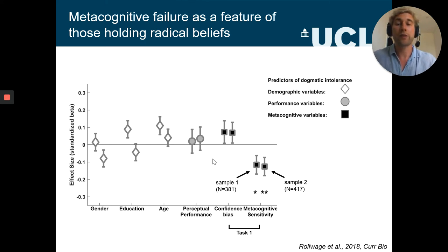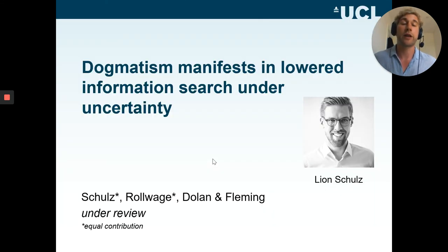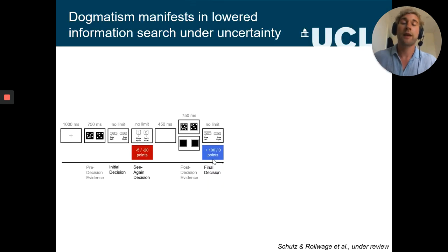Then we went on and tried to extend these findings in a study that I did in collaboration with Leon Schulz, where we asked, is it maybe that dogmatic people not only show a deficit in recognizing their own mistakes, but could also be that they might not be as willing to seek out additional information that could help them to revise their opinions? So in this study, we followed a very similar approach. The task looked a tiny bit different.